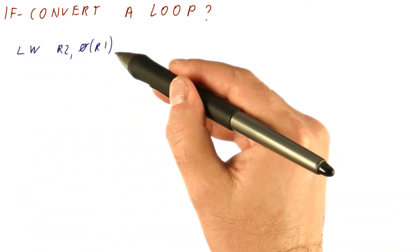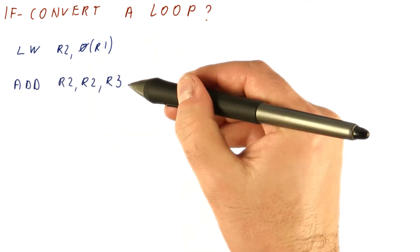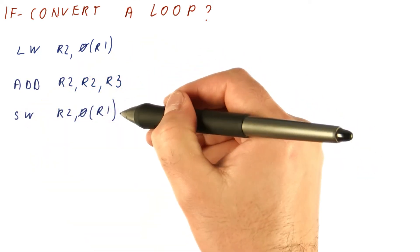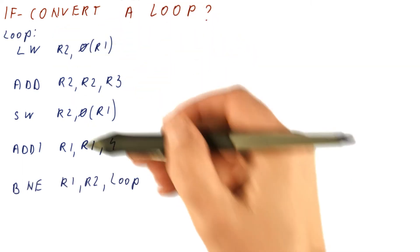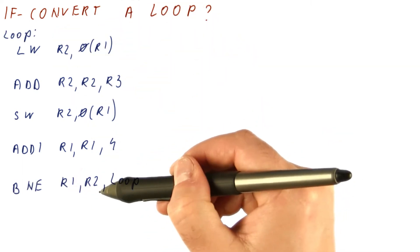Let's go back to our loop that loads from some memory address, adds something to that, stores that back in memory, adds four to the pointer, to the beginning of the loop, unless the pointer has reached some final value.